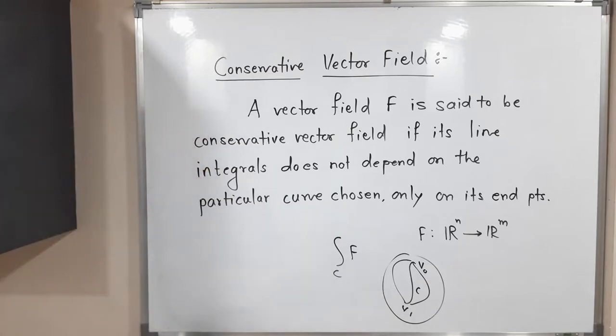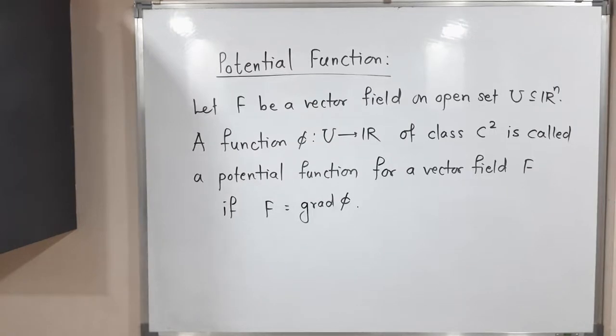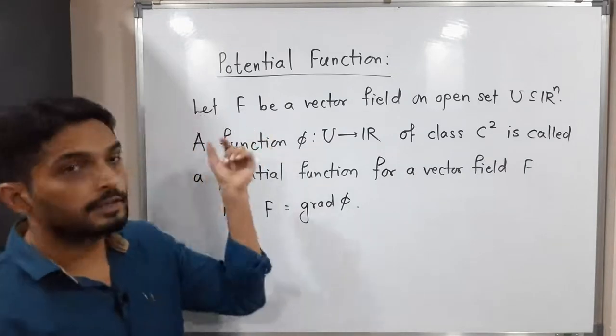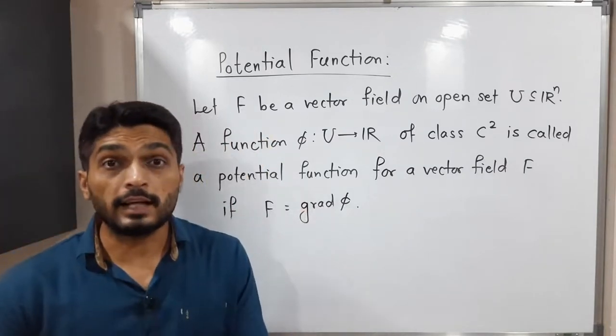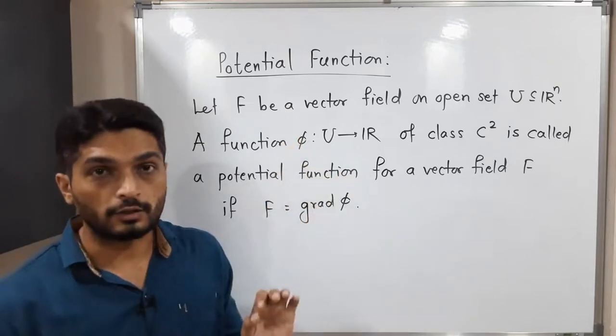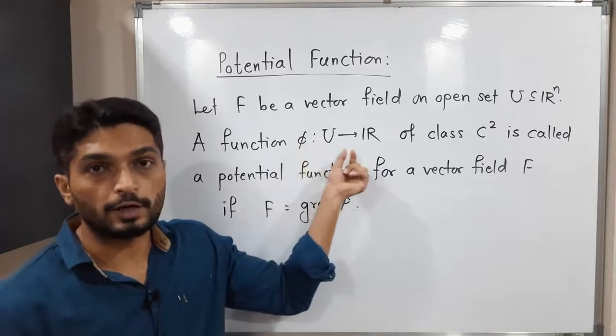After that we will discuss the next concept. Let us discuss the concept of potential function. What is the meaning of potential function? Let us consider a vector field F. Then for a scalar field - that means a function from subset of R^n to R - so phi is a function from subset of R^n to R, so it's a scalar field.